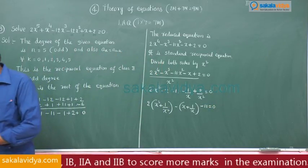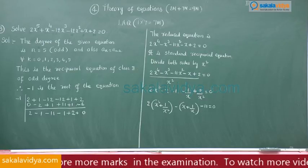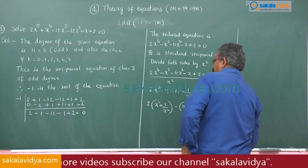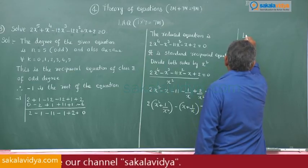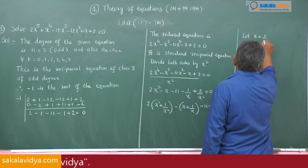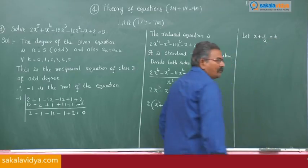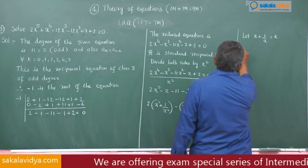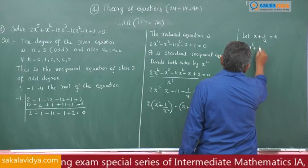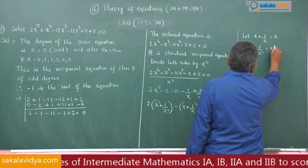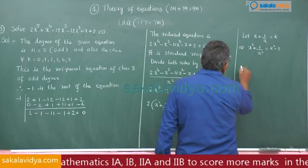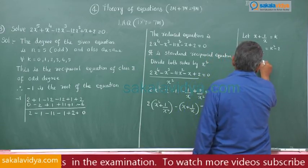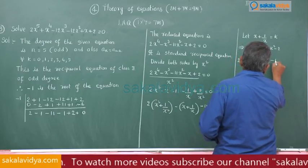Now we have to put this into quadratic form. Let x plus 1/x equal k. Then x² plus 1/x² equals k² minus 2. So this becomes 2(k² minus 2) minus k minus 11 equals 0.